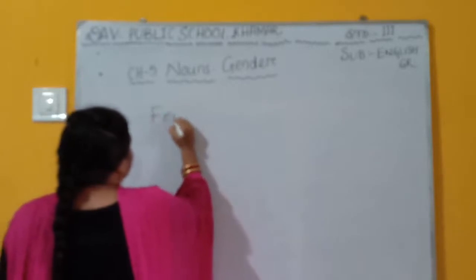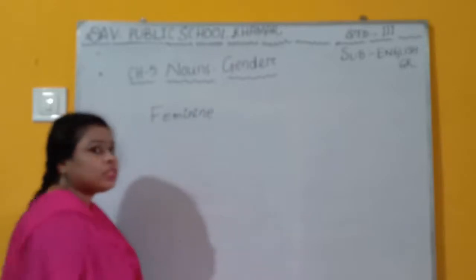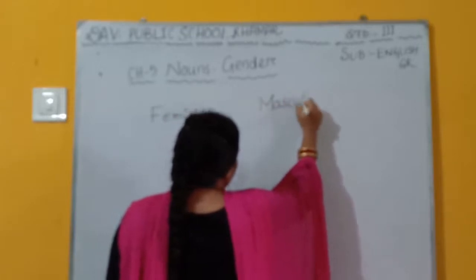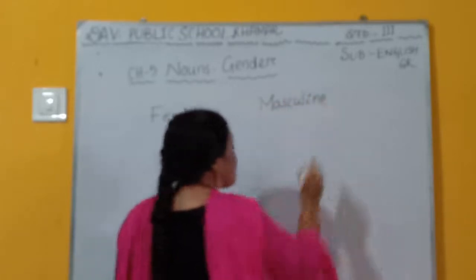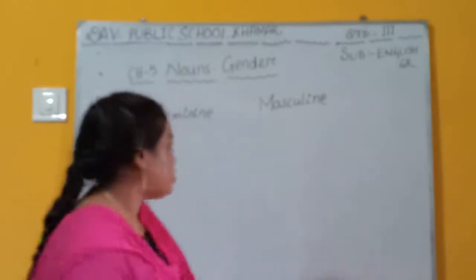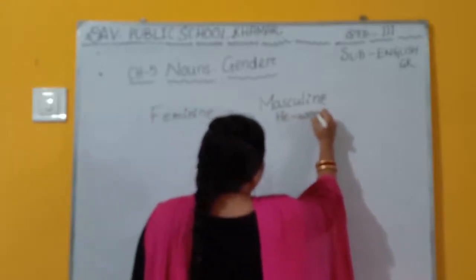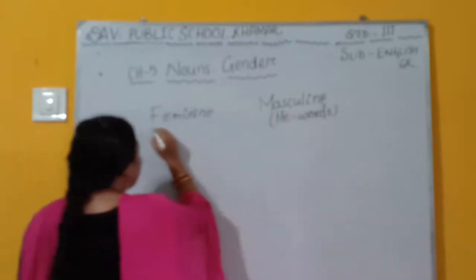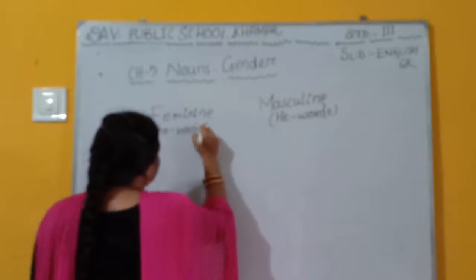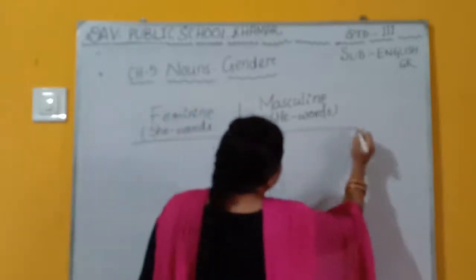There are two genders: feminine and masculine. In class 1 and 2 you read about he-words and she-words. Here, masculine gender corresponds to he-words, and feminine gender corresponds to she-words. So we can differentiate what is feminine gender and what is masculine gender.